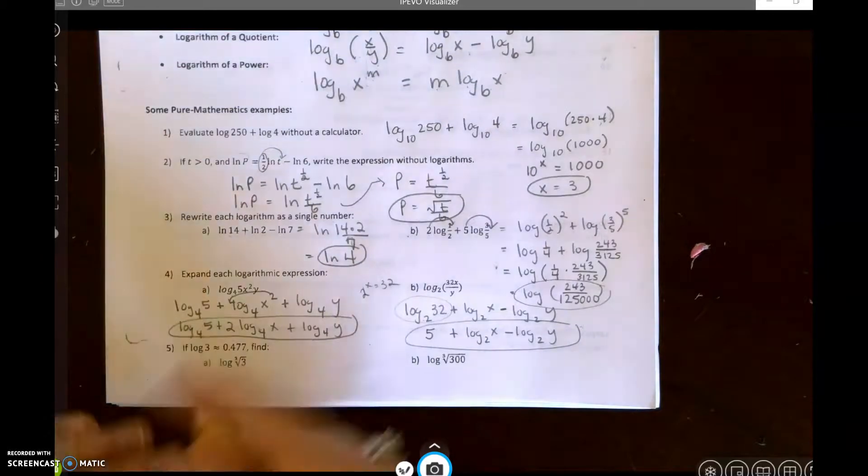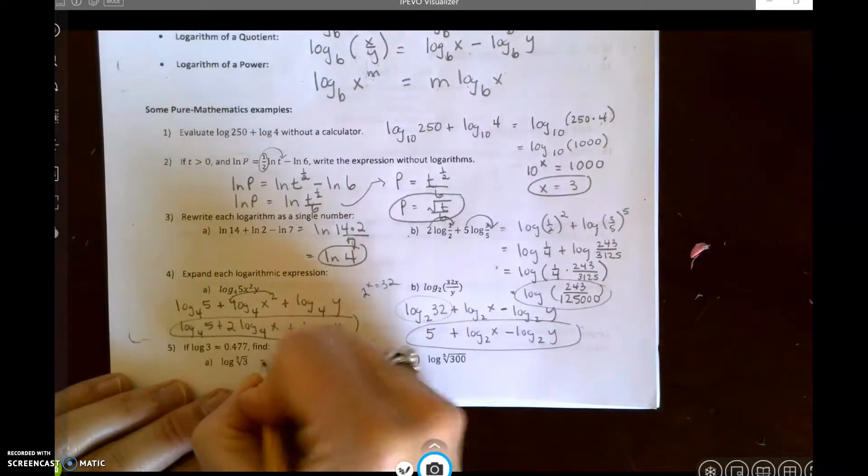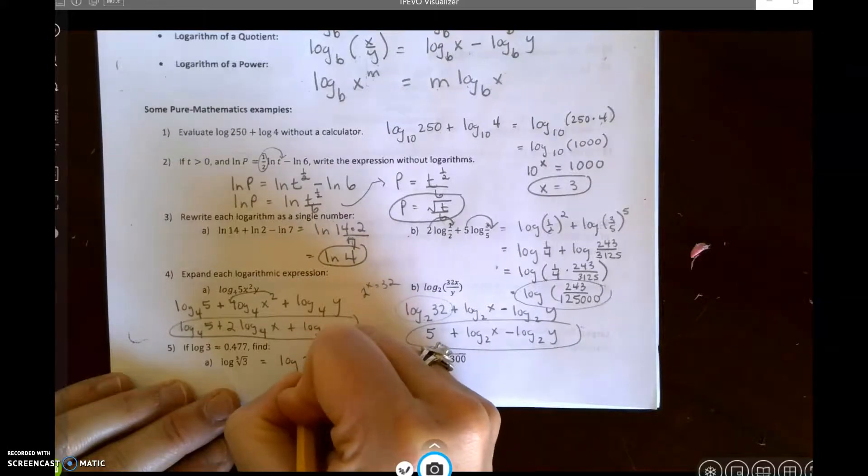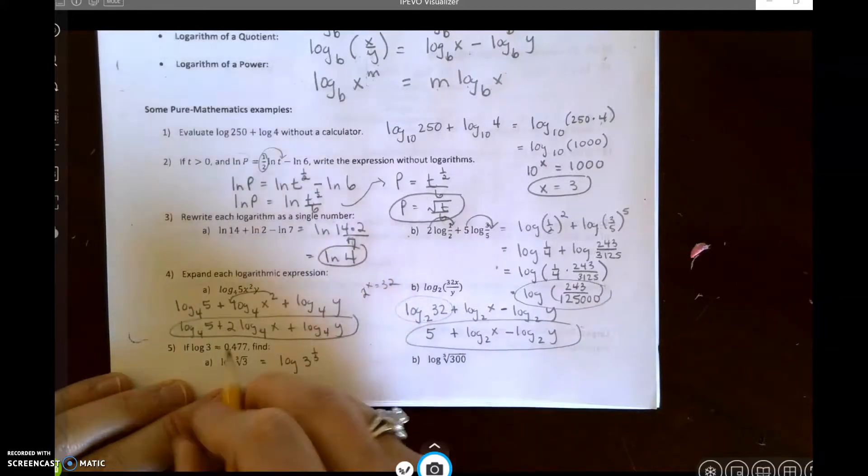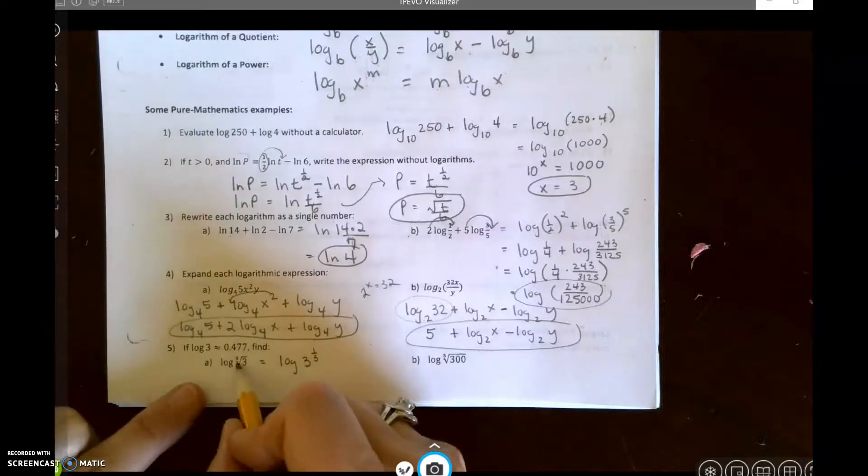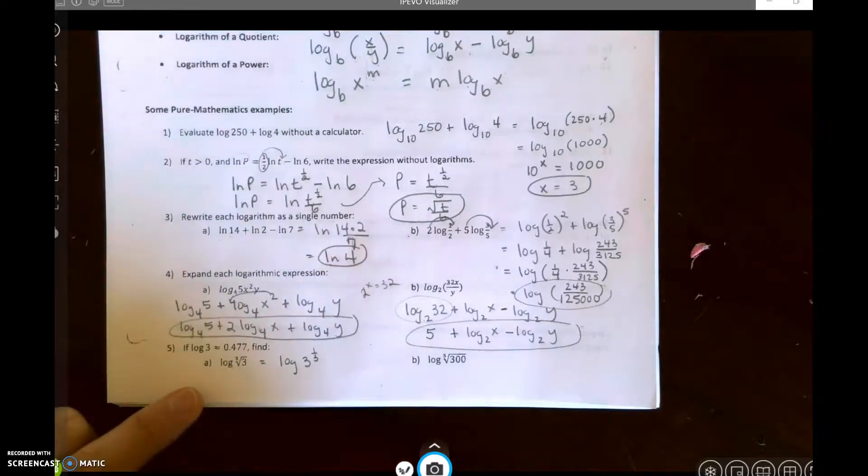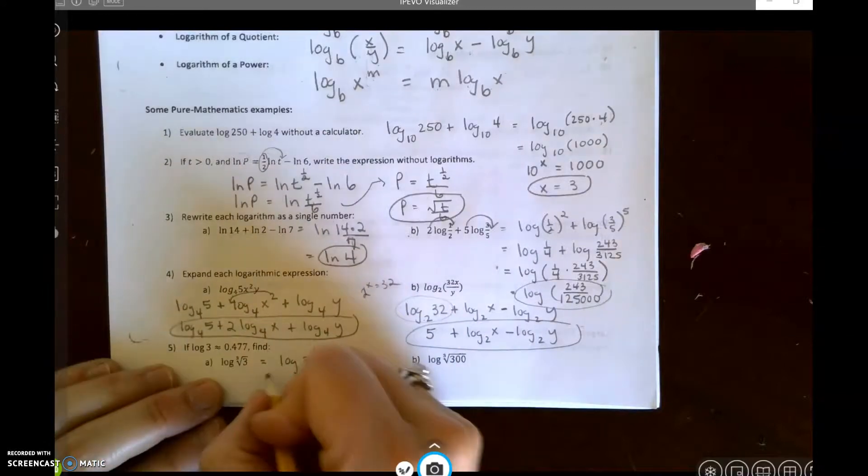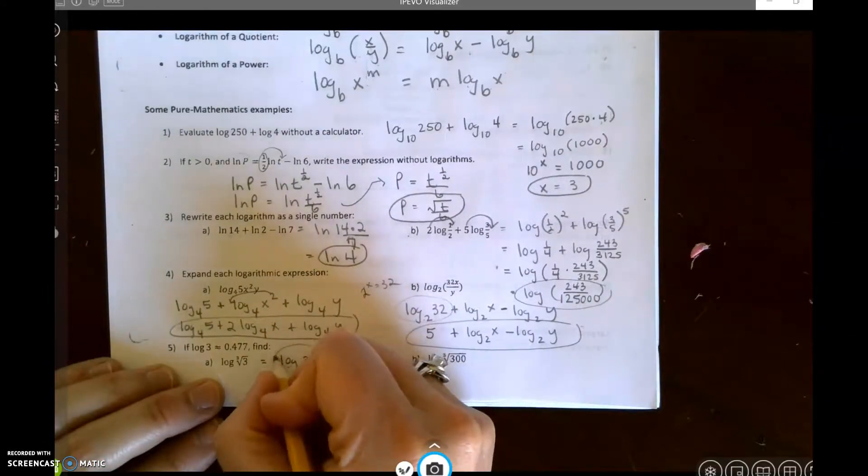So what I'm going to do is I'm going to just start rewriting this. I know that this is the log of 3 to the one-third power, because we learned the very first unit that radicals can be written with exponents. Then we learned that this exponent can get moved to the front.